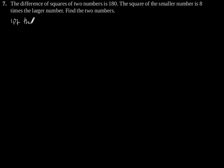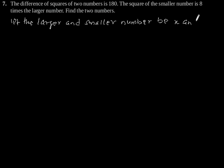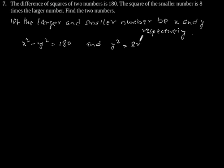Let the larger and smaller number be x and y respectively. According to the question, x square minus y square is equal to 180, and the square of smaller number is 8 times the larger number. So y square is equal to 8x.